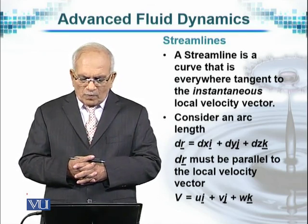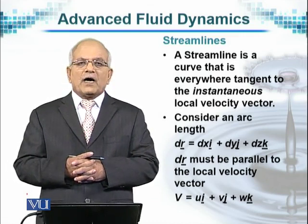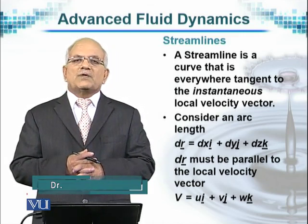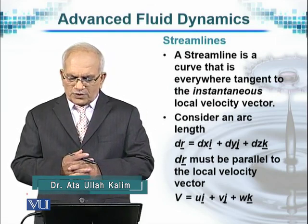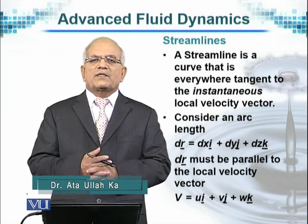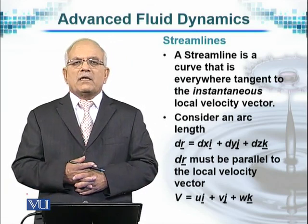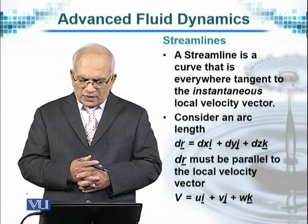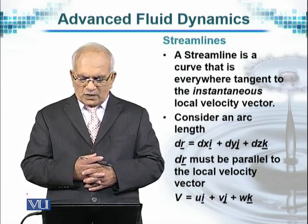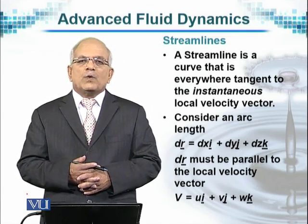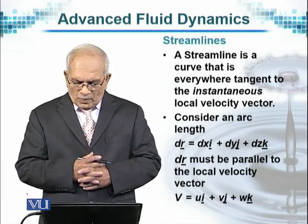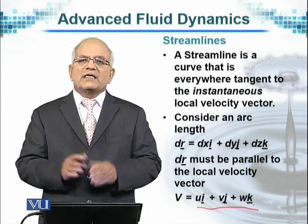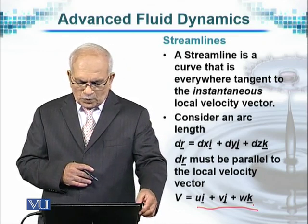We consider an arc represented by dr, and in its component form it will be dx·i — where i is the unit vector in the x direction — plus dy·j — where j is the unit vector in the y direction — plus dz·k, where k is the unit vector in the z direction. Therefore, dr must be parallel to the local velocity vector v, which is given by u·i plus v·j plus w·k.